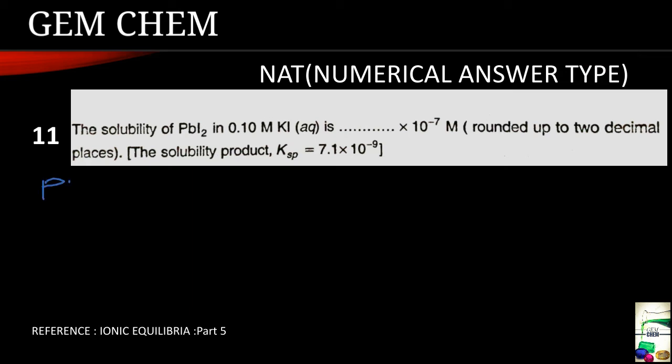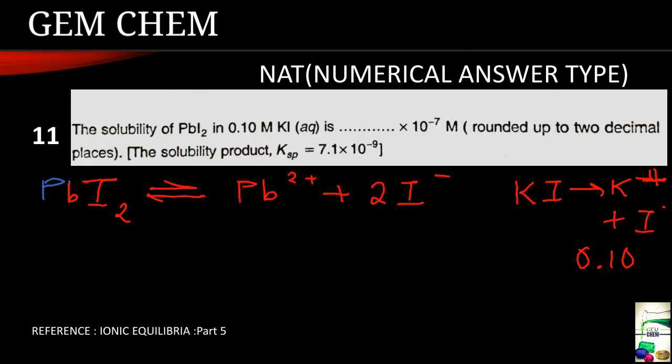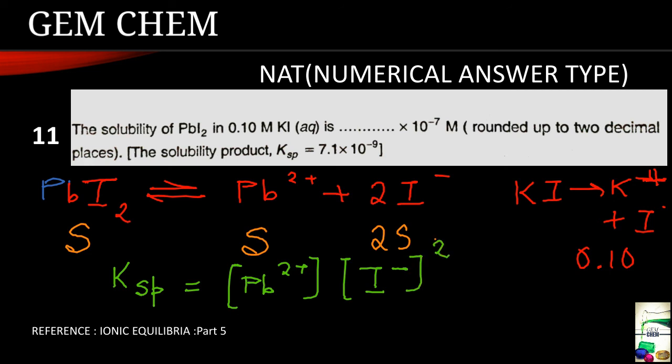Now lead iodide, if we just break it then Pb 2 plus plus 2I minus, and we have KI solution. So KI breaks into K plus plus I minus. So here K plus ion concentration is 0.10 molar and iodide concentration is also 0.10. Now if here we take the solubility as S then for this case it is S and this is 2S. And we know the formula for Ksp, it is Ksp equals to concentration of Pb 2 plus and concentration of I minus to the power 2.